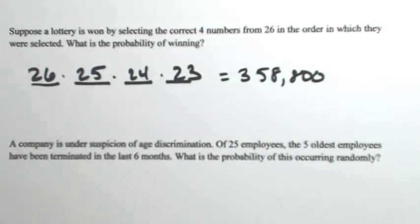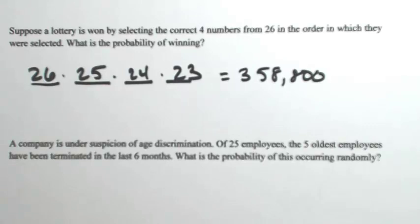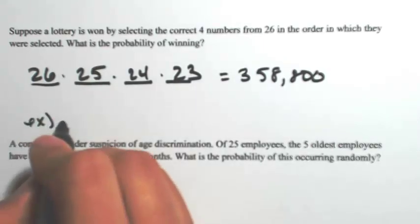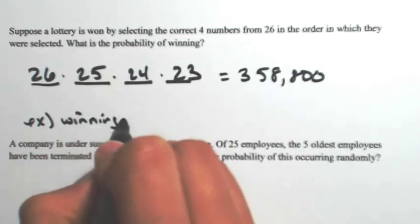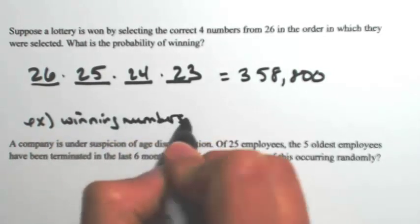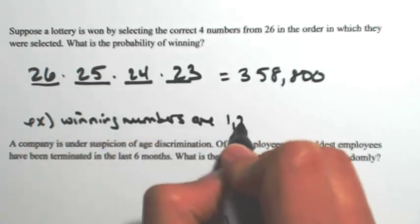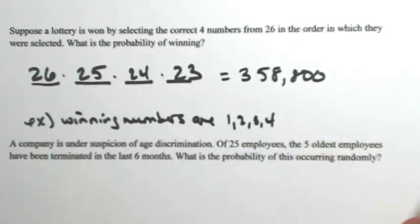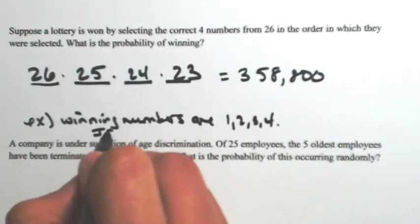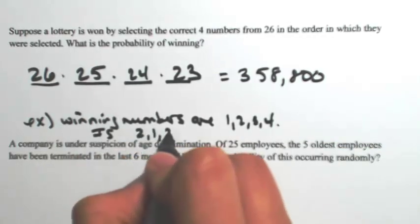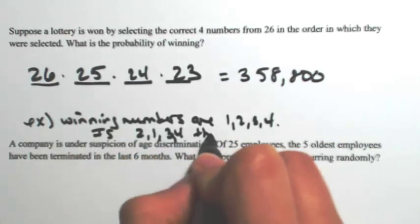But before we complete that problem, we need to ask ourselves a pretty important question. If I were to switch two of the numbers, would that change the number? So let's just say as a little side example here, let's say the winning numbers are 1, 2, 3, 4. Let's just say that's what they are. Is, let me switch them, 2, 1, 3, 4, the same?